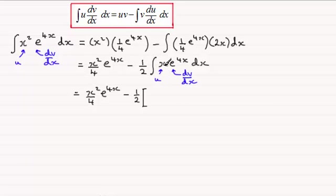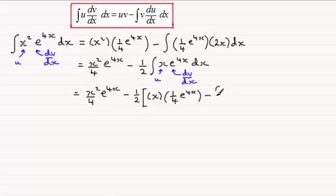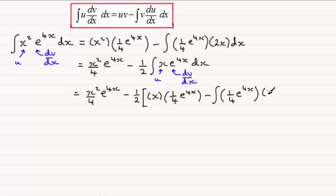Since we've pulled the half out the front, set up a square bracket and carry on integrating by parts in the normal way. It's going to be u, which is x, multiplied by v — v being the integral of e to the 4x, so that's a quarter e to the power 4x. Then minus the integral of v, so copy that quarter e to the power 4x back in, multiplied by du/dx. Since u is x, the differential is just 1. Integrate all of this with respect to x and close the bracket.